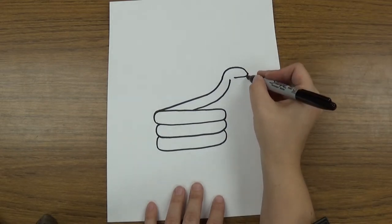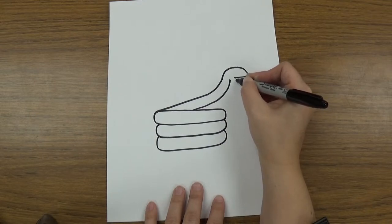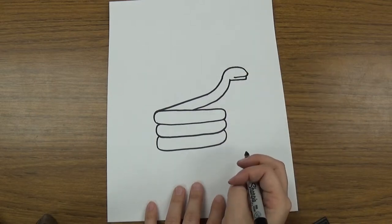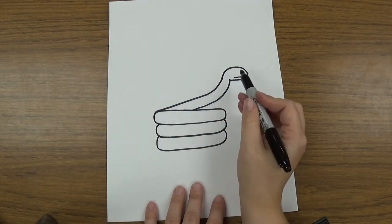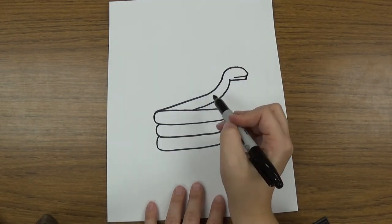And then you're gonna draw another line that touches the bottom of this and curves all the way over to touch that bottom. Just like that. You can probably figure out where the snake is now, right? You've got his head coming out there.